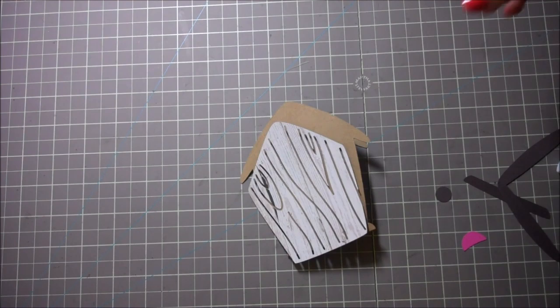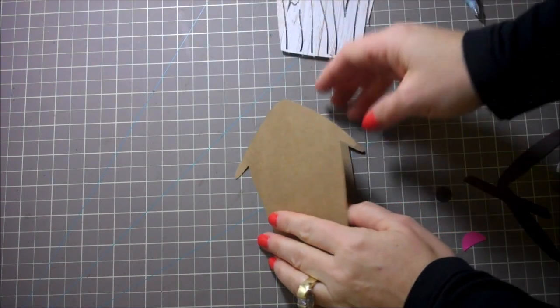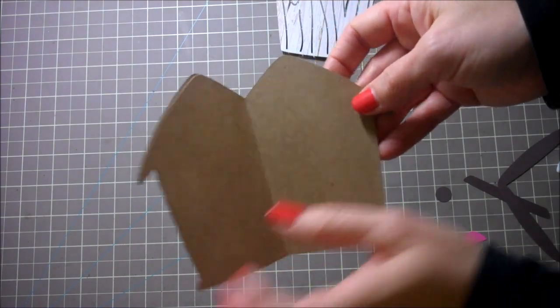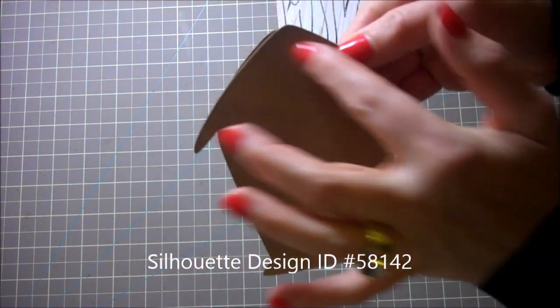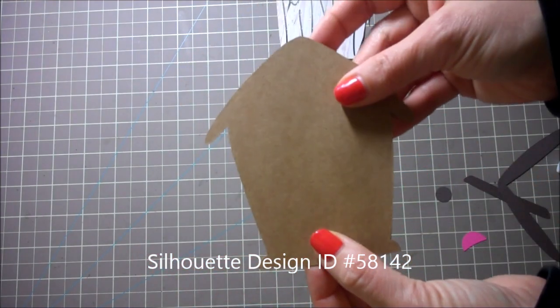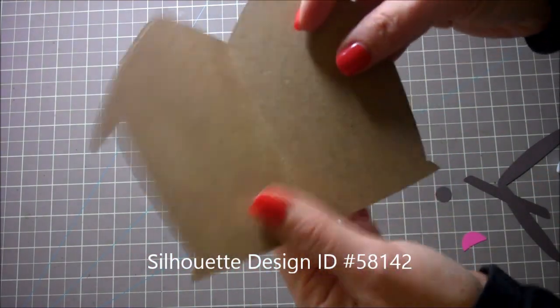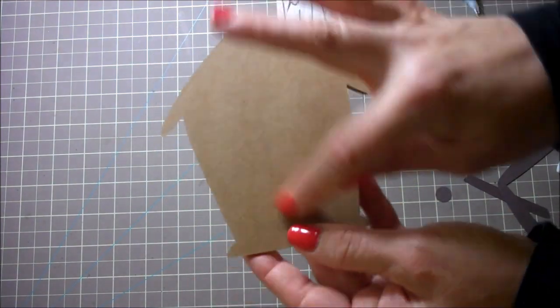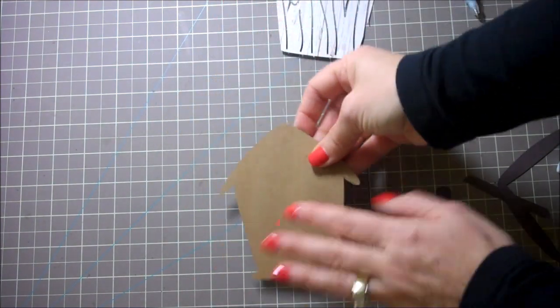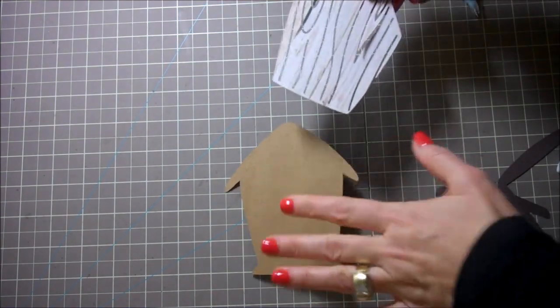Hi everybody, this is Julie with ReadySetStamp.com and today we're going to make a cute little birdhouse card. I've gone ahead and welded the two parts together and then I've cut one extra one to put on top, because otherwise the birdhouse would just be kind of in half. So you cut an extra one of these out so that you can put it on top and make it look like a full birdhouse.